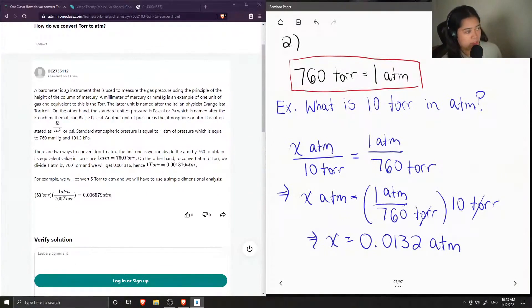A barometer is an instrument that is used to measure the gas pressure using the principle of the height of the column of mercury. A millimeter of mercury, or MMHG, is an example of one unit of gas, and equivalent to this is the TOR. The latter unit is named after the Italian physicist Evangelista Torricelli.